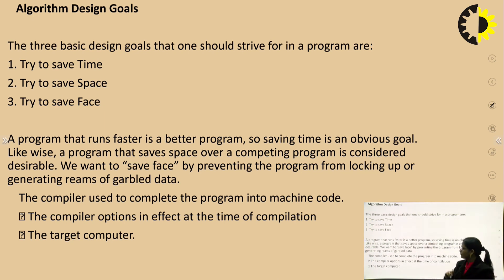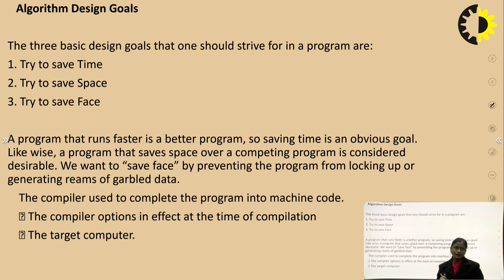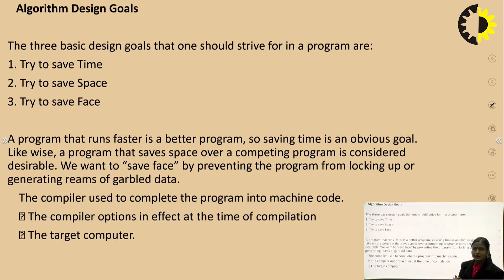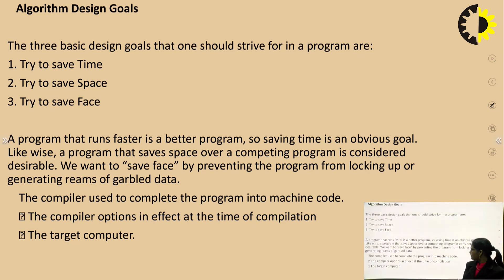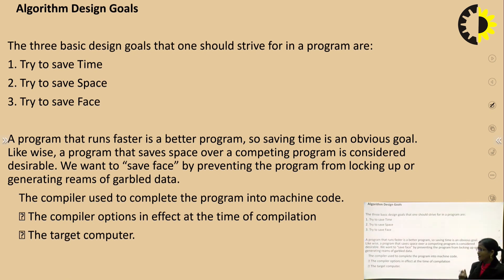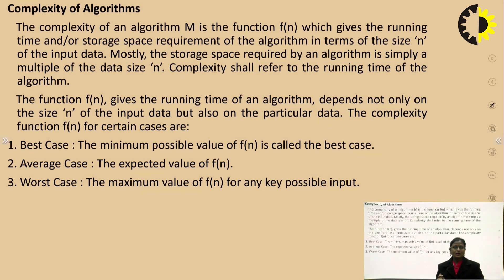Third is try to save face — we want to prevent the program from locking up or generating garbled data. These are the basic design goals of an algorithm. Also relevant are the compiler used to compile the program into machine code, the compiler options at the time of compilation, and the target computer.